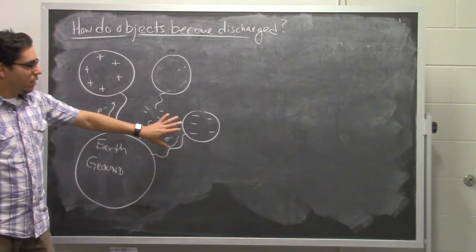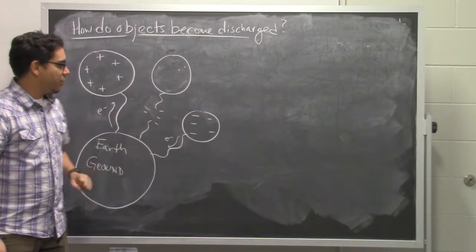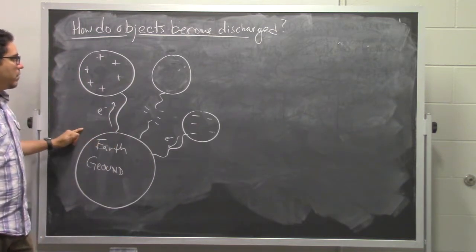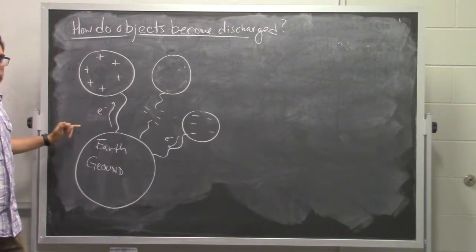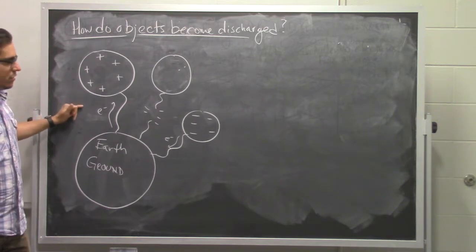leaving behind the neutral atoms on the metal itself. And so this process of connecting different objects to the ground or to something that is a much larger source of electrons than the object itself is the way by which we discharge these objects.